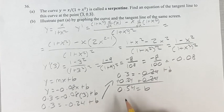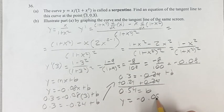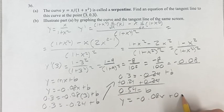Now, we know m, we know b, and we can find the equation of the tangent line is y equals negative 0.08x plus 0.54.